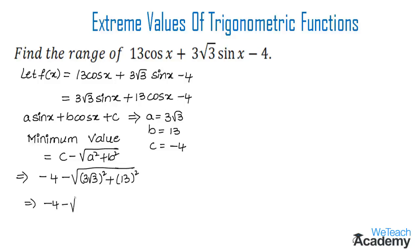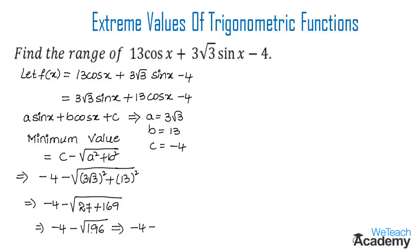Computing: (3√3)² = 9 × 3 = 27, and 13² = 169. So we get -4 minus √(27 + 169) = -4 minus √196 = -4 minus 14, which gives the minimum value as -18.